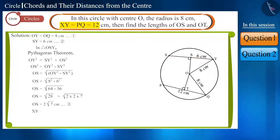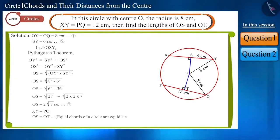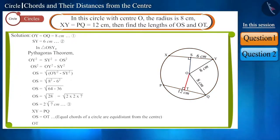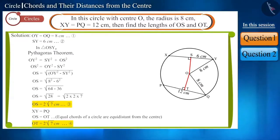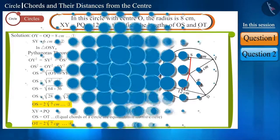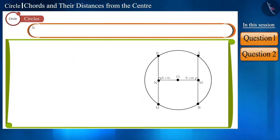Now we have to find the length of OT. According to the figure, OT is the perpendicular from the center of the circle to chord PQ. According to the question, XY and PQ are equal chords, and we know that equal chords of a circle are at equal distance from the center. Therefore, the length of OT will also be 2√7 cm. Similarly, we found the lengths of OS and OT.